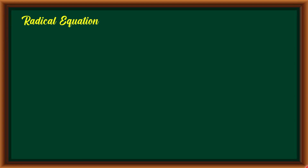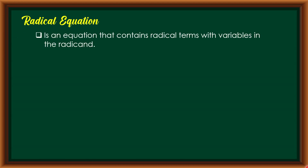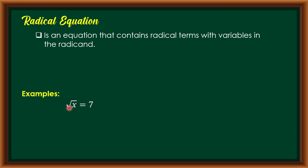First, what is a radical equation? A radical equation is an equation that combines radical terms with variables in the radical. Let us have the following examples. I have the square root of x is equal to 7 — we have here an equation in which the radical contains a variable.